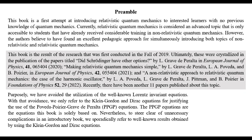Purposely, we have avoided the utilization of the well-known Lorentz invariant equations. With that avoidance, we only refer to the Klein-Gordon and Dirac equations for justifying the use of the Povetta-Poirier-Grave de Peralta (PPGP) equations. The PPGP equations are the equations this book is solely based on. Nevertheless, to steer clear of unnecessary complications in an introductory book, we sporadically refer to well-known results obtained by using the Klein-Gordon and Dirac equations.